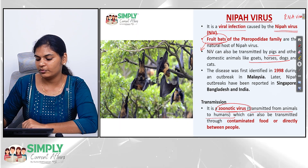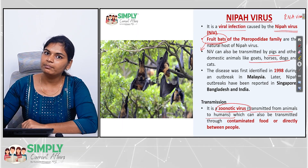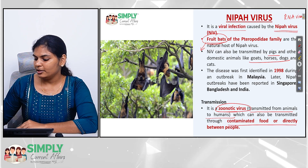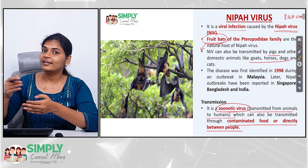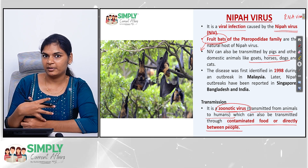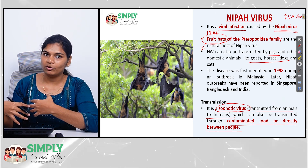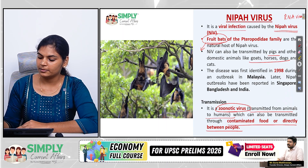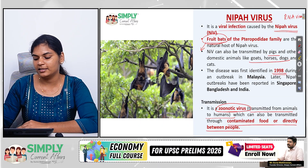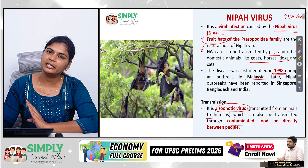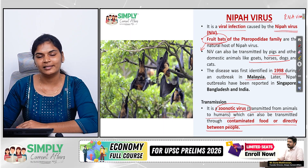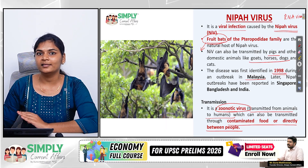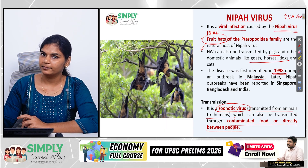Nipah virus is a zoonotic disease — those that get transmitted from animals to humans. It can also get transmitted through contaminated food or even directly between infected people. If I am infected with Nipah virus, there is a chance that someone who comes in contact with me can also get the infection. This was first identified in 1998 in Malaysia. Later there were outbreaks in different countries including Singapore, Bangladesh, and India — and in India, Kerala is a primary spot for Nipah virus outbreaks.